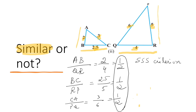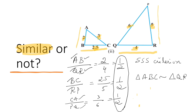Now let us write the similar triangles in symbolic form. For triangle ABC, the corresponding vertex of A is Q, corresponding vertex of B is R, and corresponding vertex of C is P. So triangle ABC is similar to triangle QRP.